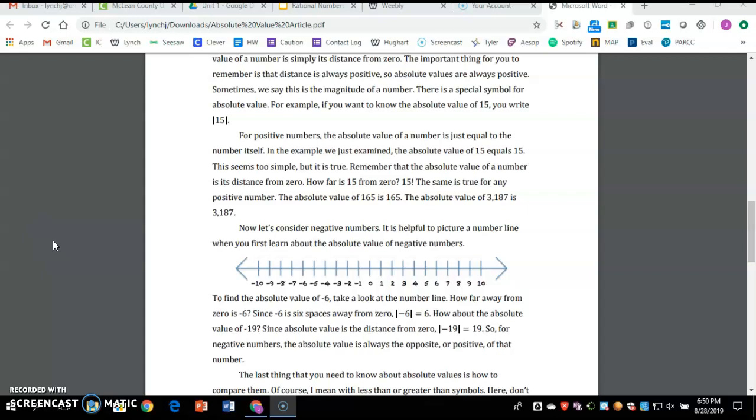Remember that the absolute value of a number is its distance from zero. How far is 15 from zero? 15. The same is true for any positive number. The absolute value of 165 is 165. The absolute value of 3187 is 3187.